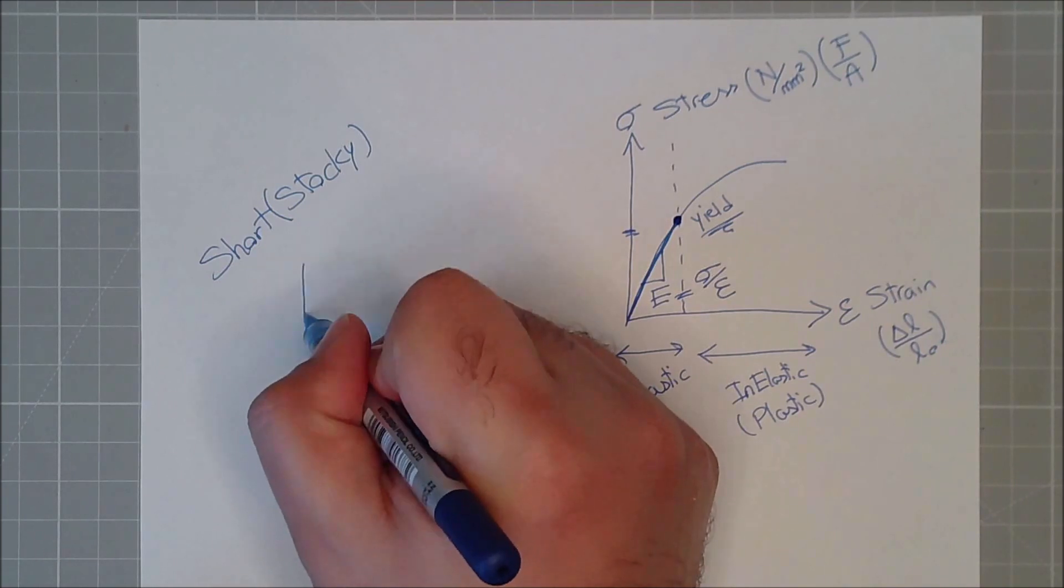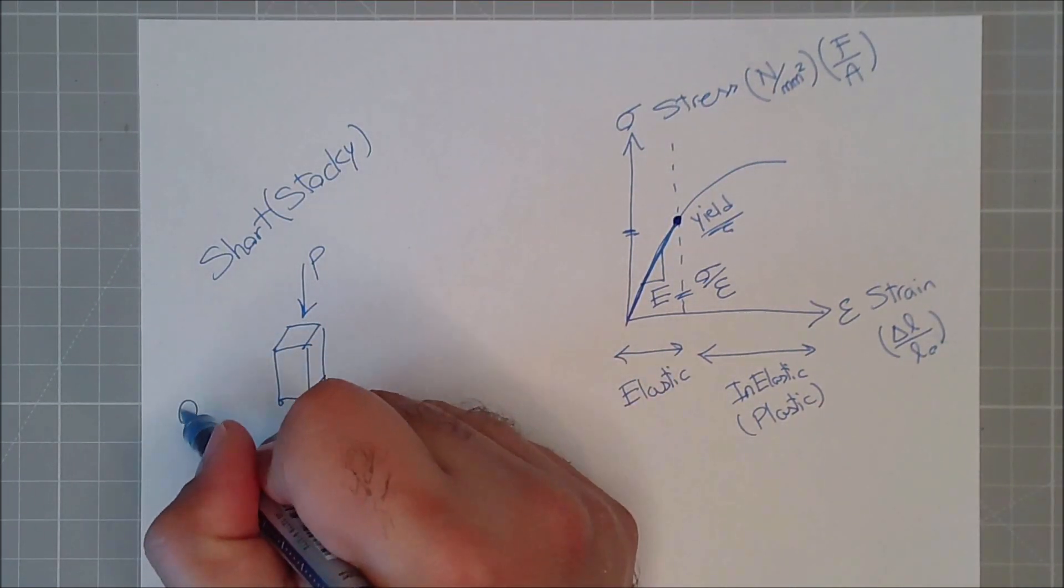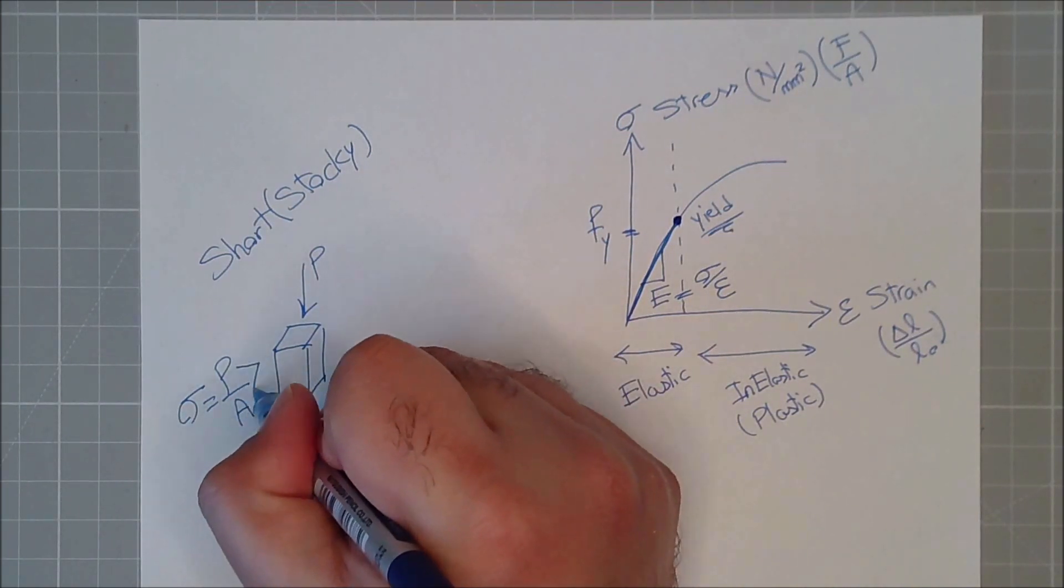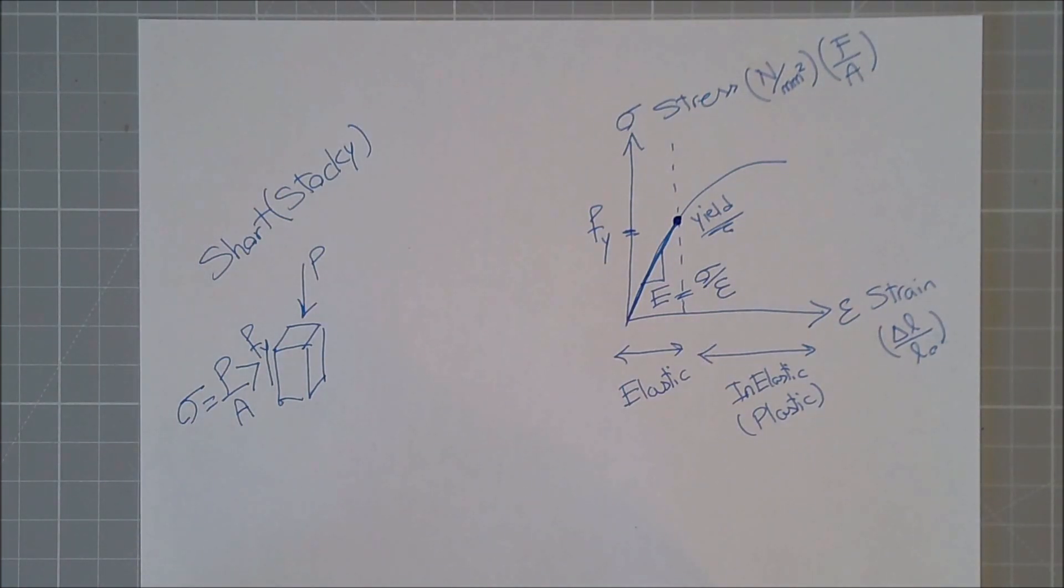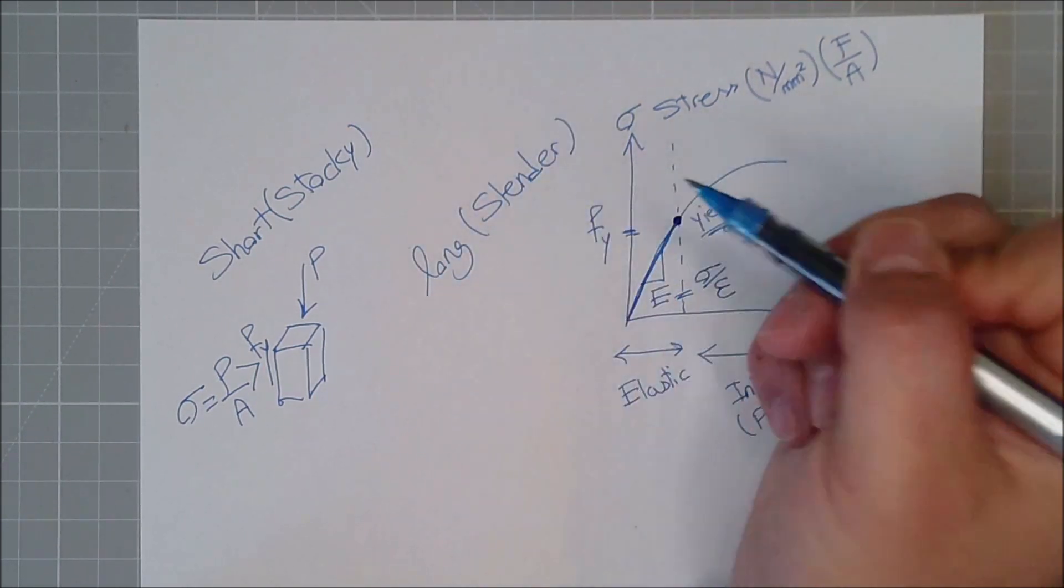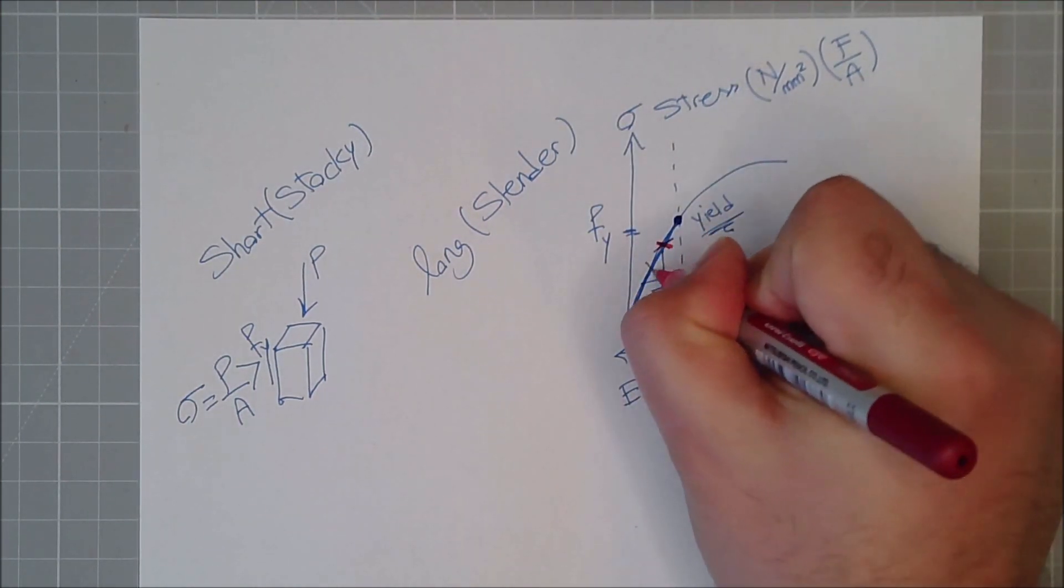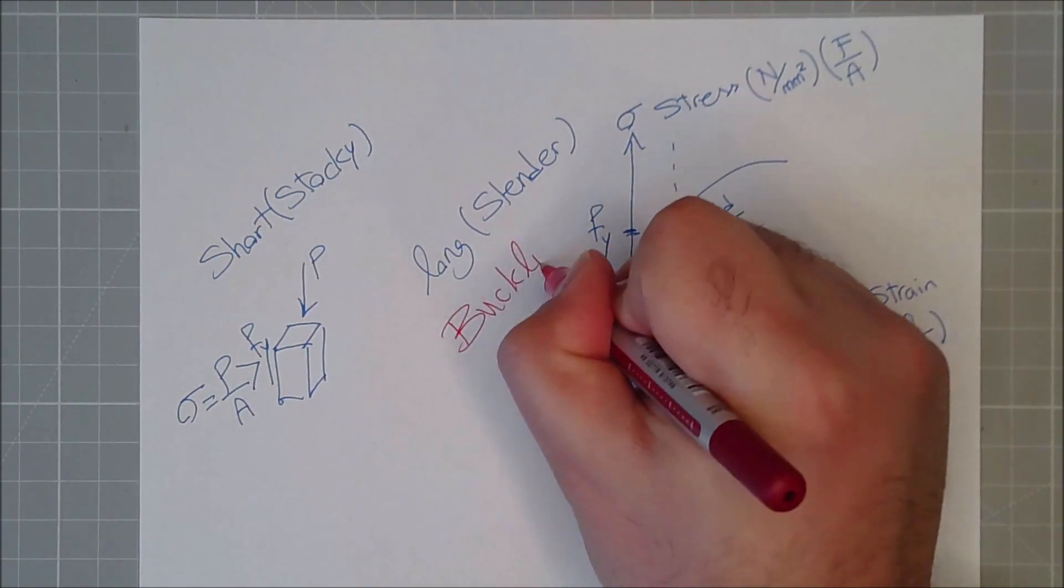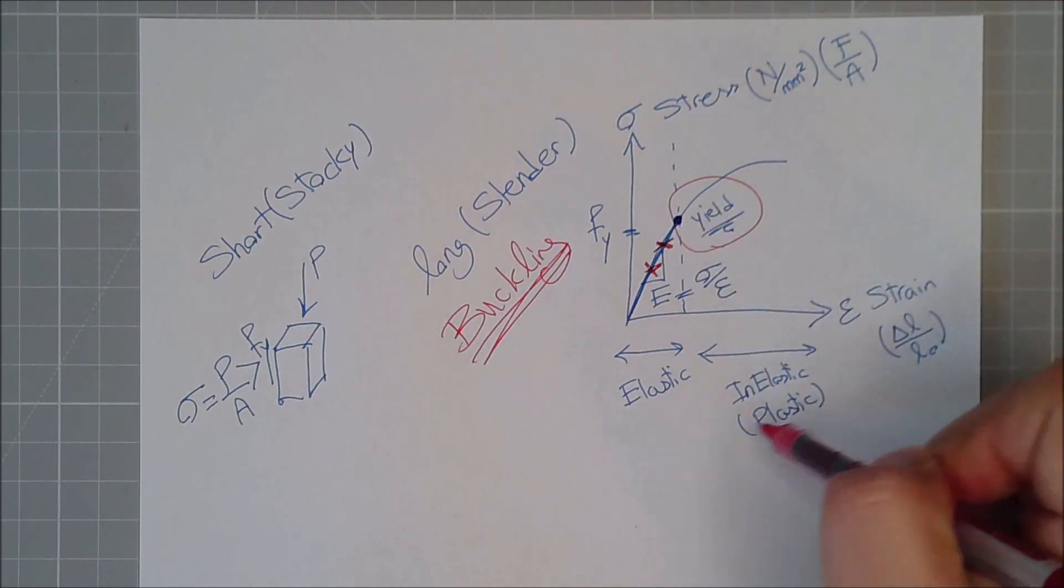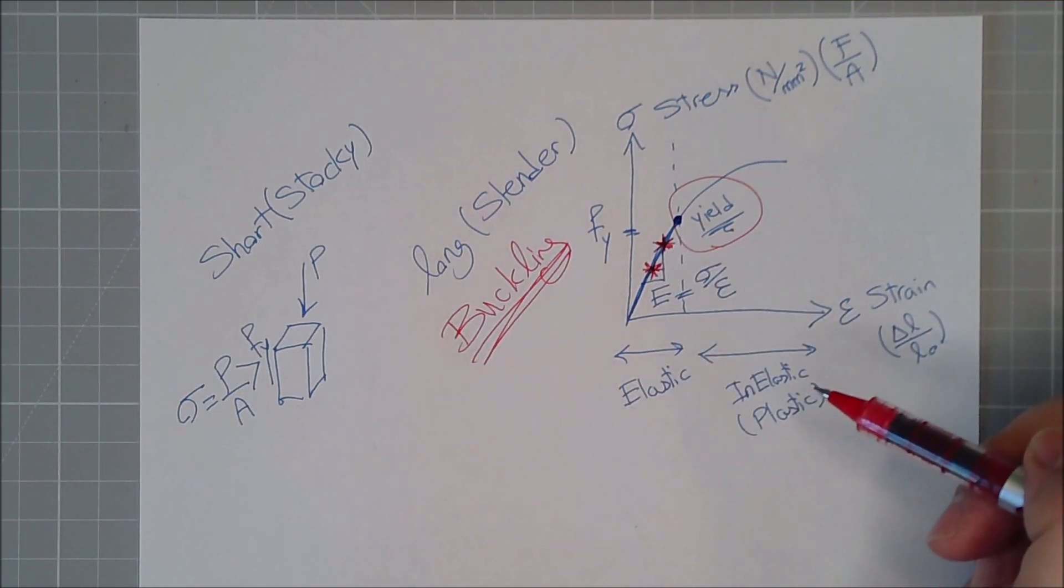For short and stocky columns, usually this failure happens. That's where the load P is applied, and then this column reaches its stress at yielding. If this P over area becomes bigger than the allowed yielding stress, that would be the failure. But for long and slender columns, before reaching to that point, somewhere around here, you might have buckling as well. You might be lucky and buckling doesn't happen, then your column will fail due to the yielding, or you might be unlucky and the column might buckle.